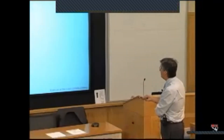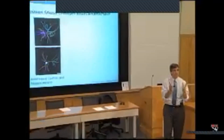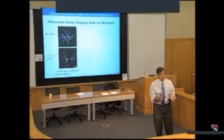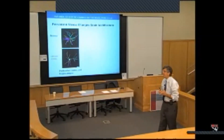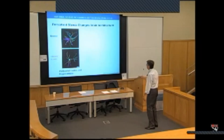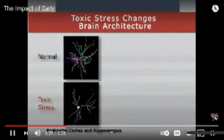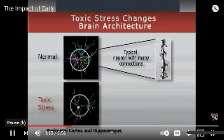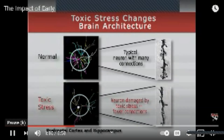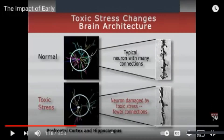Persistent stress changes brain architecture. There are changes in the structure of the nerve cell responsible for communication and for the ability of children to respond in their world. This is a typical neuron sitting in the prefrontal cortex — and here is the way it ends up after undergoing chronic stress during development. Toxic stress results in architectural changes. What a difference — just looking at these two pictures — how much less development there is in a neuron that's damaged by toxic stress.